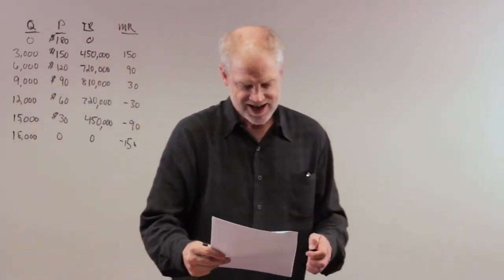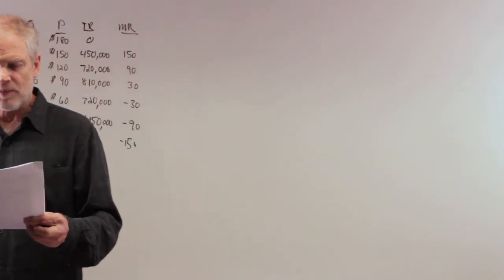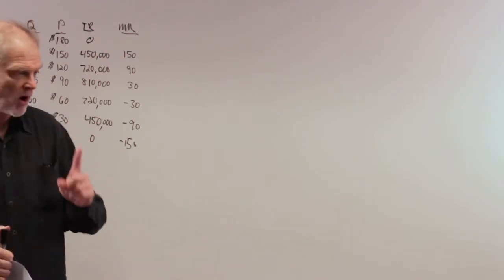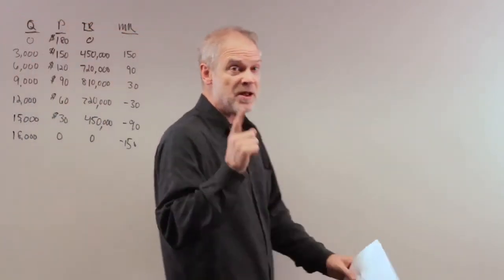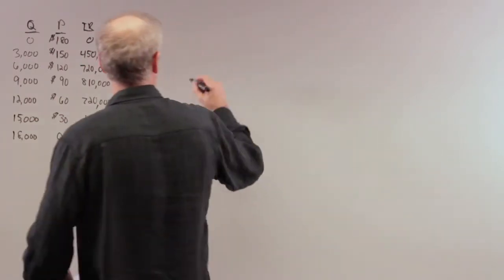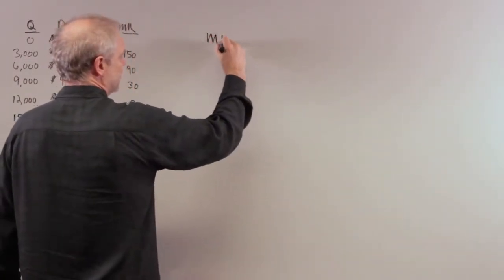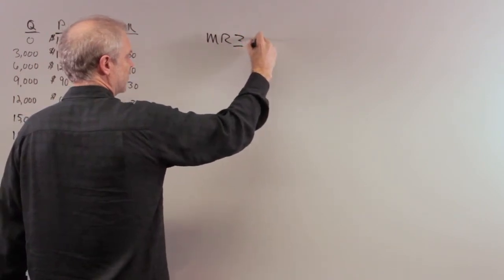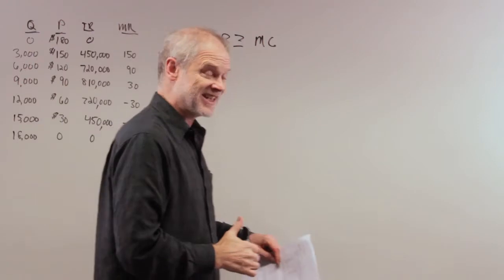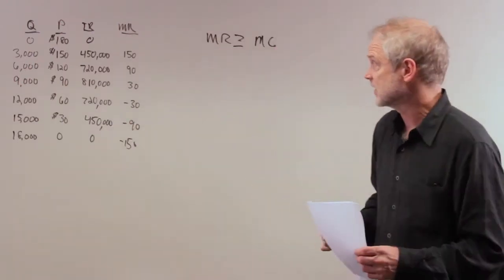To maximize profits, if this was a monopoly dominated by one firm, what would they do? We know the rule for the monopolist: they produce up to the point where marginal revenue is greater than or equal to marginal cost. Here, marginal cost is zero—there is no marginal cost per subscriber.